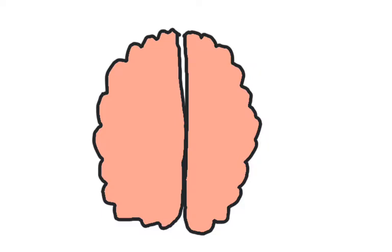For instance, language and math tended to be functions carried out by the left cerebral hemisphere, whereas facial recognition and spatial orientation were carried out by the right hemisphere.